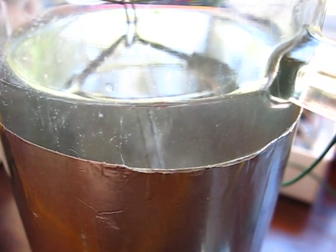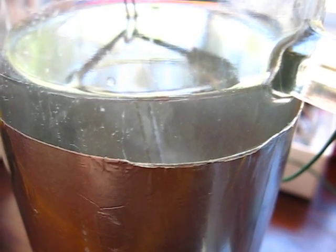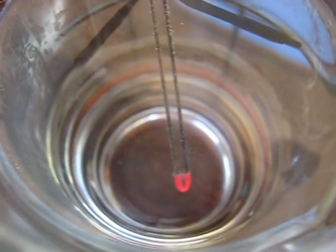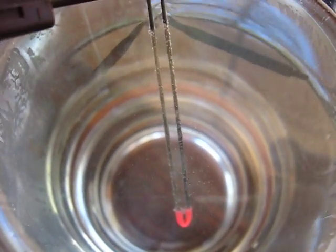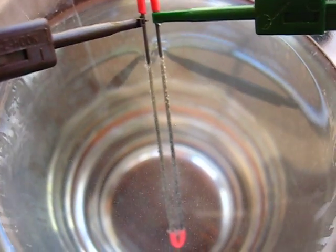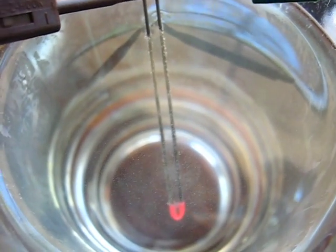Here you can see hydrogen and oxygen bubbling off of a couple of pencil leads from a mechanical pencil. Those leads are spaced simply by having little bits of insulation slipped over the ends and held apart at both ends.